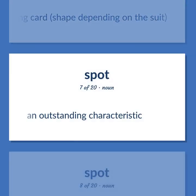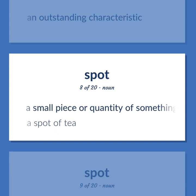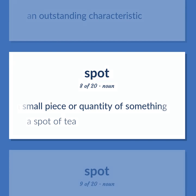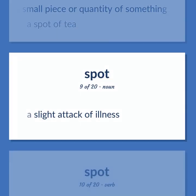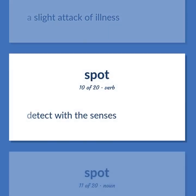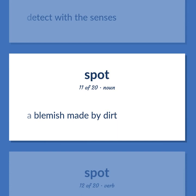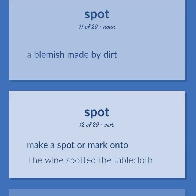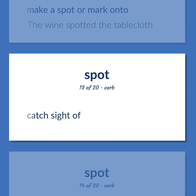An outstanding characteristic. A small piece or quantity of something — a spot of tea. A slight attack of illness. Detect with the senses. A blemish made by dirt. Make a spot or mark onto. The wine spotted the tablecloth. Catch sight of.